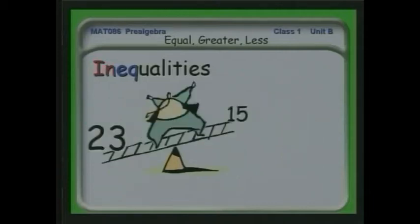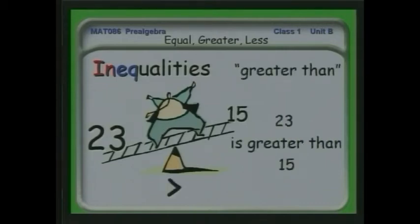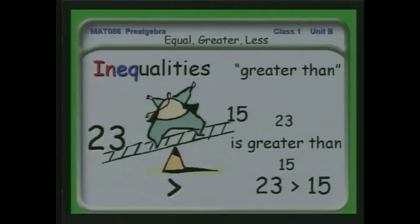Here we have 23 and 15. We know that 23 is greater than 15, and we write it this way, where the big side of that arrow symbol faces the larger of the mathematical quantities. We read this as: 23 is greater than 15.